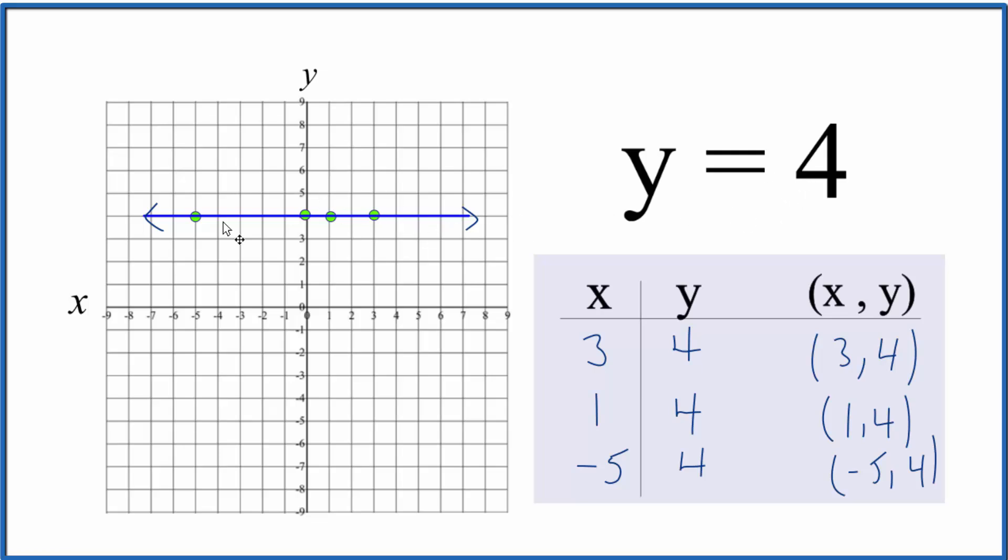Note again, it crosses the y-axis, it intercepts the y-axis at 4, and the slope of this line is 0. This is Dr. B. Thanks for watching.